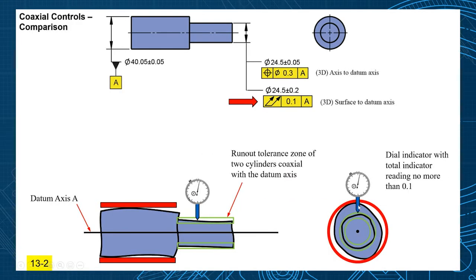This side picture shows it also here. Here's your datum axis, your smaller inside cylinder and the outside cylinder. The difference between those is 0.1. So now the surface of that feature has to lie within that tolerance zone.